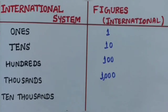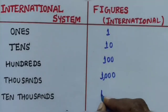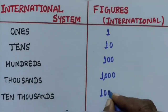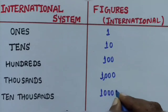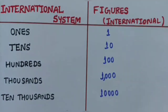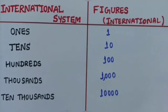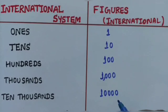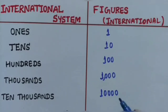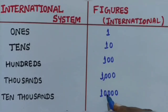Next is Ten Thousands, written as 10,000 - one followed by four zeros. The first comma is applied after the hundreds place, meaning after 3 digits from the right. Units, Tens, Hundreds - then Ten Thousands.